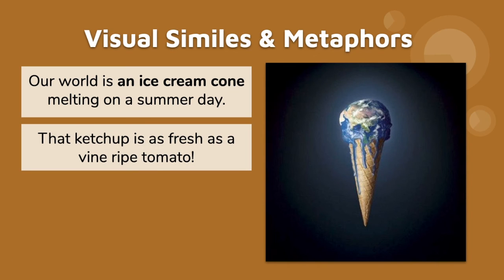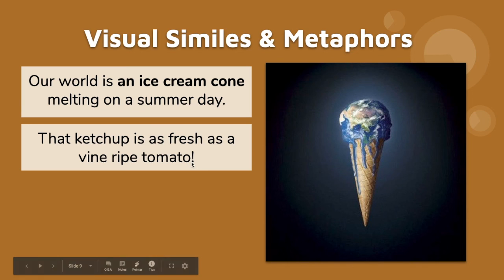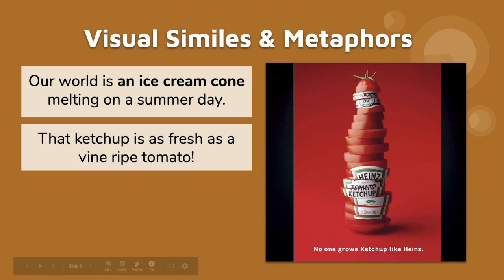Or maybe you like this one: 'that ketchup is as fresh as a vine-ripe tomato.' It's got 'as,' which means it's a simile. And maybe you draw that ketchup as if it was actually a sliced-up tomato — it's a cool ad, a visual interpretation of that.